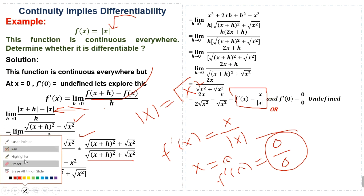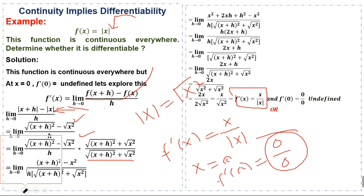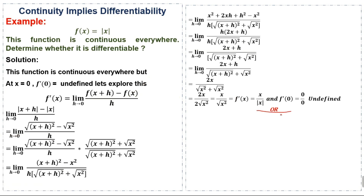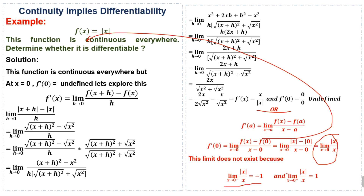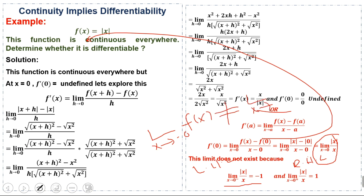We also verify this using the alternative definition: f'(a) = limit as x approaches a of [f(x) − f(a)] / [x − a]. Applying this at a = 0 gives limit as x approaches 0 of |x| / x. Computing the left-hand limit gives −1 and the right-hand limit gives +1. Since the left-hand limit does not equal the right-hand limit, the derivative does not exist at x = 0.